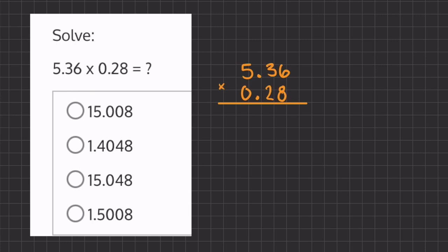Now let's multiply using long multiplication. We'll take our first number, 8, in our first column and multiply by all the numbers above. So we have 8 times 6 which is 48.